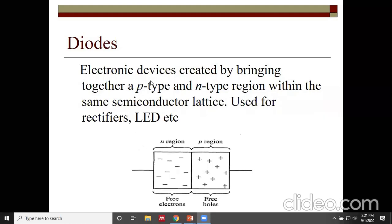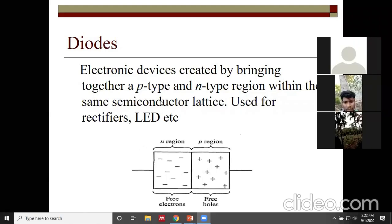An electron device created by bringing together a P-type and N-type region within the same semiconductor lattice creates a diode, also called a PN junction diode or semiconductor diode. It is mainly used for rectification — the conversion of AC into DC — because diodes are basically unidirectional conductors, meaning they conduct in only one direction.